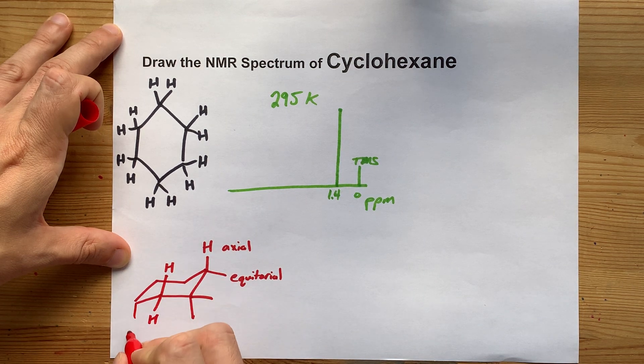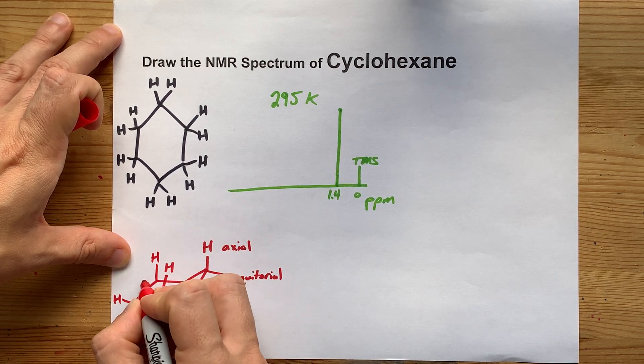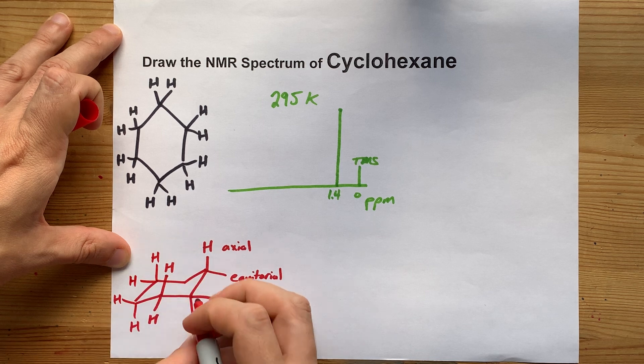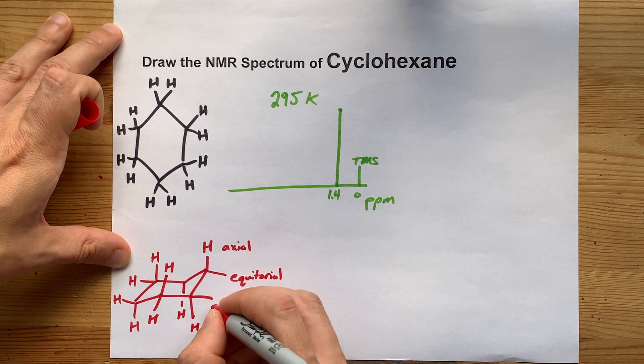Sorry, I'm trying to speak and draw a chair conformation at the same time. The point is that there are six equatorials and six axials at any particular time.